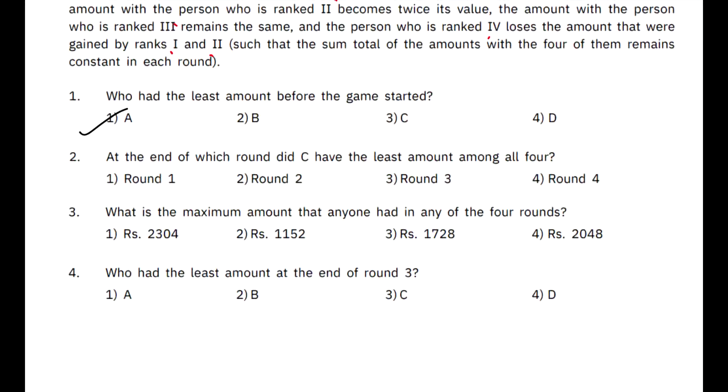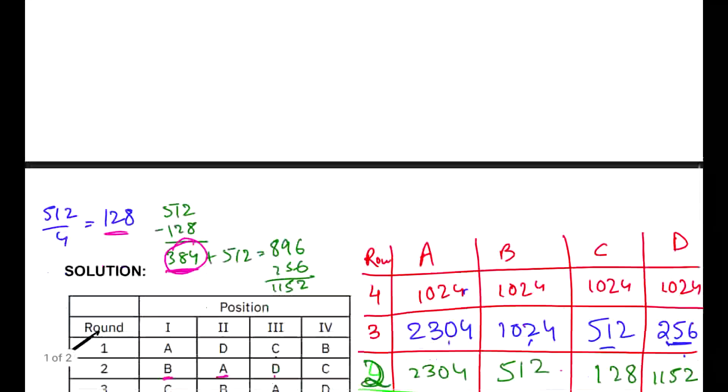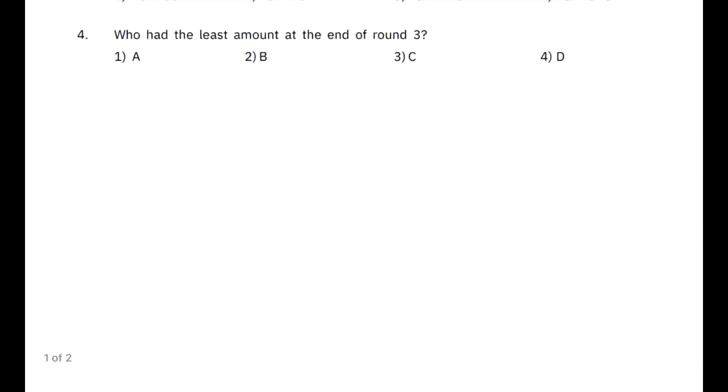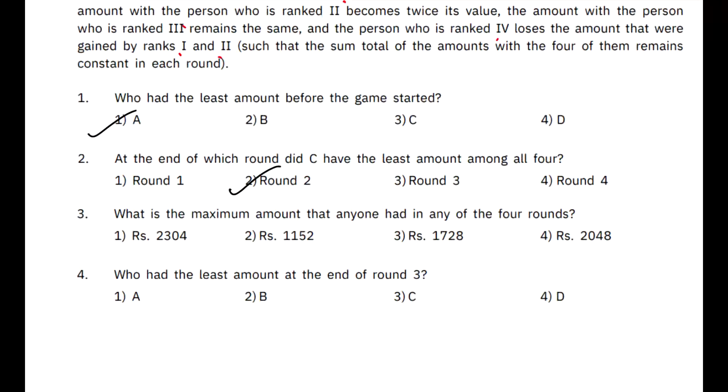Question number 2. At the end of which round did C have the least among all the four? So, C ke paas sab se kam kis round ke end mein tha? If you just check this column C, the least value was at the end of round 2. So, therefore, the answer of this question is option B, round 2.